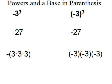And in the second example, the base is negative 3, because it's in parentheses. So it's negative 3 times negative 3, which is positive 9, times negative 3, which is negative 27.